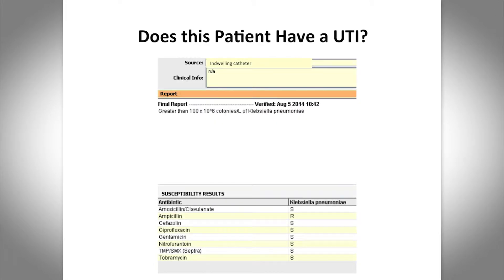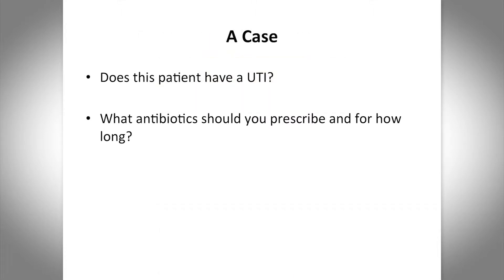Your culture result comes back the following day showing it's from an indwelling catheter with greater than 100 × 10⁶ colonies of Klebsiella pneumoniae — a fairly common urinary pathogen. The susceptibilities are there, but the question really is: does this patient have a urinary tract infection, and what antibiotics should you prescribe, and for how long?